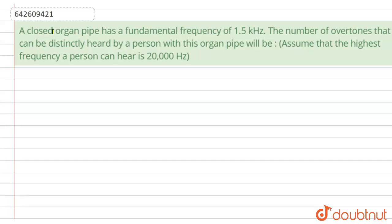Hello everyone. The question says that a closed organ pipe has a fundamental frequency of 1.5 kHz. The number of overtones that can be distinctly heard by a person with this organ pipe will be. Assume the highest frequency a person can hear is 20,000 Hz.